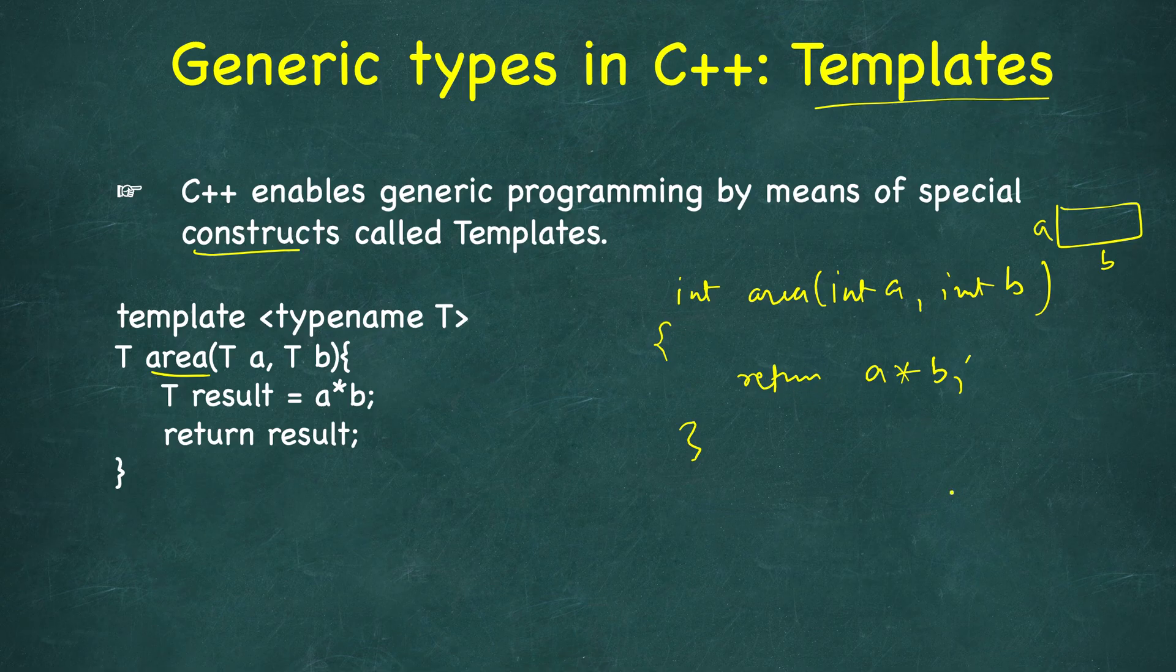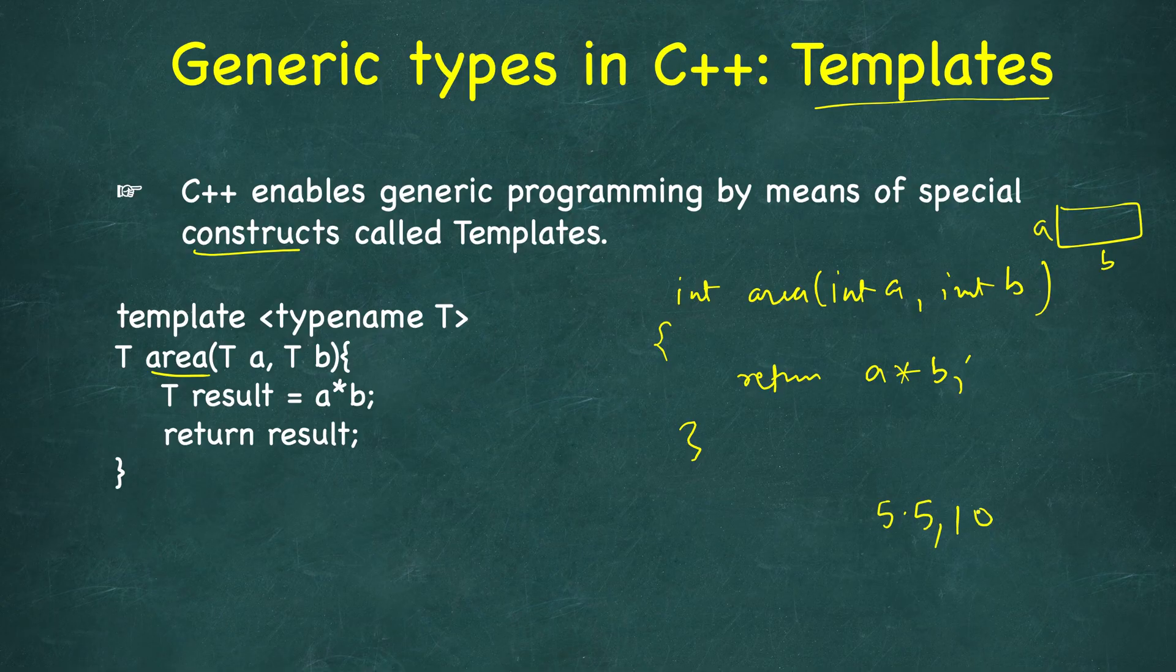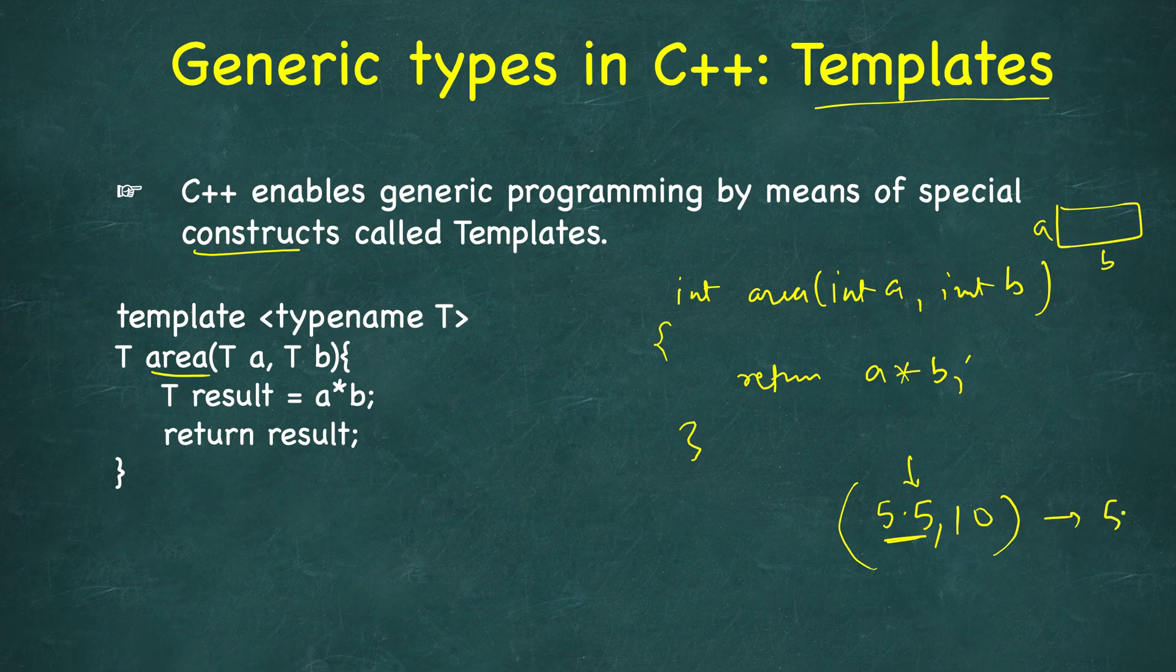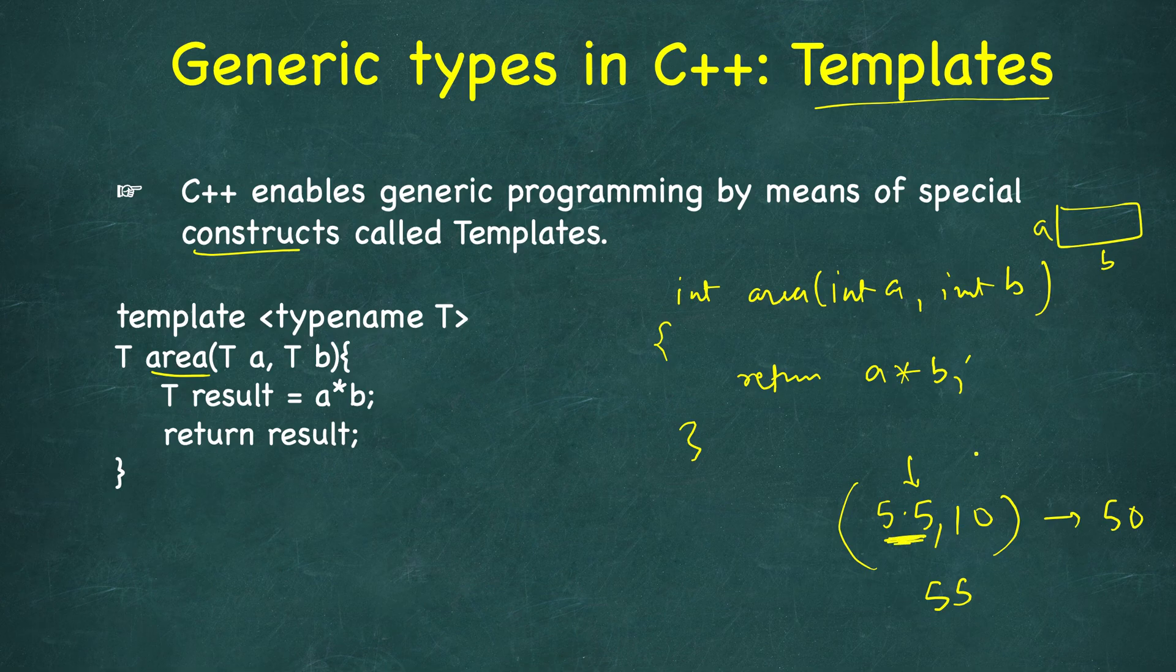So a generic way of doing this would be to use templates. You write the keyword template, then these angular braces, and then typename. You can also use class here—generally we use class for defining generic classes.